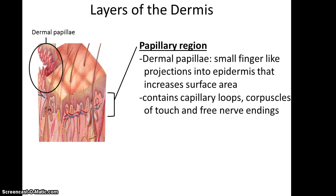The dermis comes in two sub-layers. The superficial sub-layer is called the papillary region. In the papillary region, you will see what are called dermal papillae — small finger-like projections that push up into the epidermis. The dermal papillae help increase the surface area between the two layers to help keep them in contact with each other. You'll also find many capillary loops that can carry blood to the surface, as well as corpuscles of touch, which detect touch sensations, and free nerve endings, which can do thermal sensations.